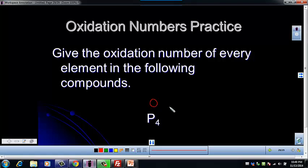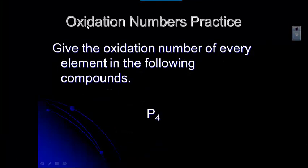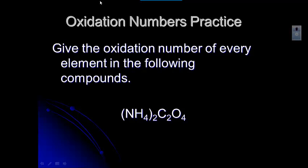Something like O₂, N₂, H₂, Au for gold, or Mg for magnesium — any of those would be zero because that's an uncombined element in its natural state. This one looks a little bit trickier — there are lots of atoms we're going to have to deal with.